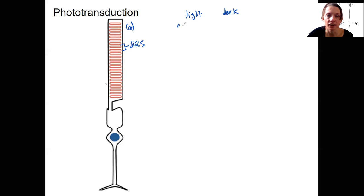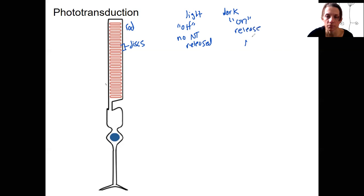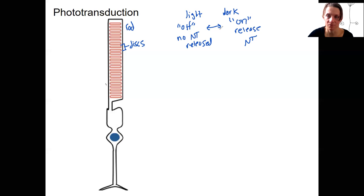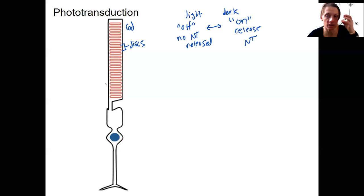They are not releasing anything — no neurotransmitter released. In the dark, they are tonically releasing neurotransmitter from this synaptic terminal. So we need to do something to change this, to be able to turn release on and off. That's the big picture — this change from neurotransmitter released to not, vice versa, is what allows us to see light and dark in different places in our vision, to see spots and stripes, and ultimately a lot more than that.